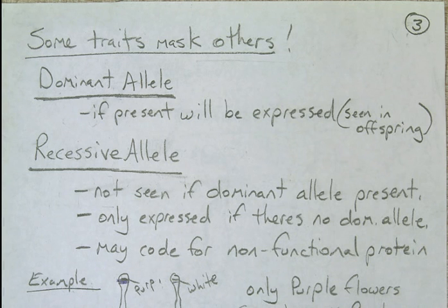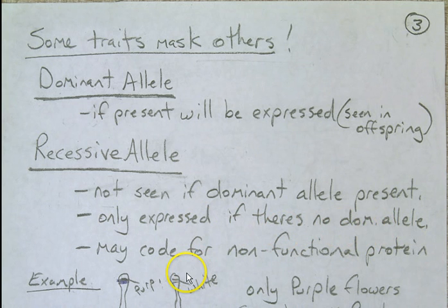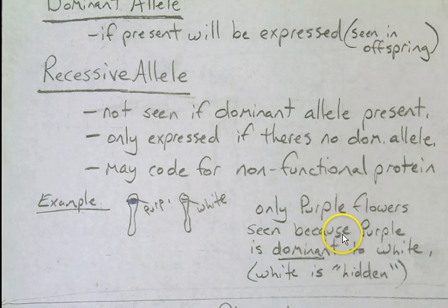Some traits mask others. The dominant allele, if present, will be expressed — it will be seen in the offspring. For example, purple flowers will be seen if the purple allele is present on even one of the two chromosomes. Recessive alleles are not seen if the dominant allele is present; they are only expressed if there is no dominant allele. A recessive allele may code for a non-functional protein — that's AP Biology only. For example, if a plant has one purple allele and one white allele, only purple flowers are seen because purple is dominant and the white is hidden.